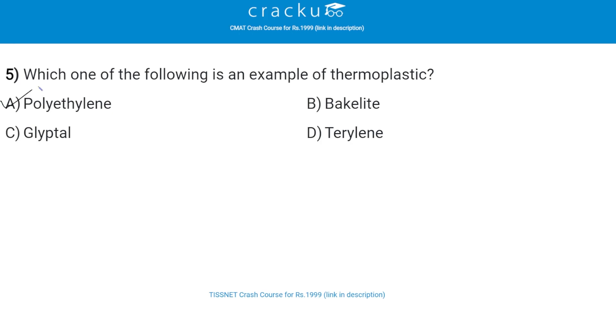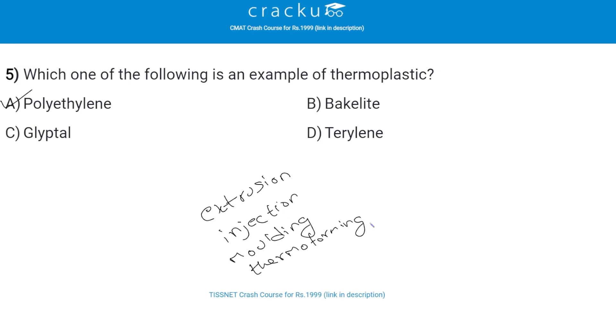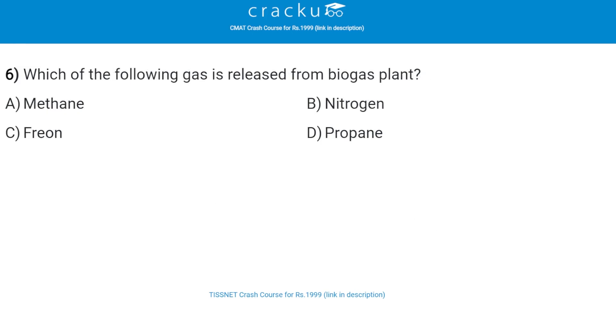A thermoplastic is a class of polymer that can be softened through heating and then processed using methods such as extrusion, injection molding, thermoforming, and blow molding.